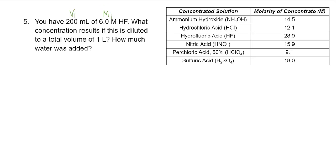It says what concentration results, so these are our final values — we're asked to find M2, where M2 equals question mark. All of this 200 milliliters is diluted to a total volume, a final volume, a V2 value of one liter. It also asks how much water was added, which we can figure out once we solve the problem, since we already have our V1 and V2.